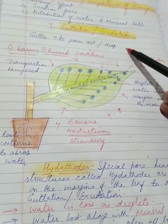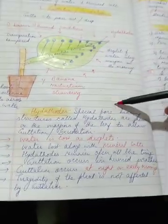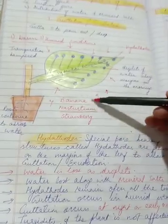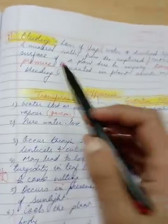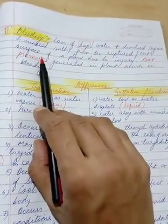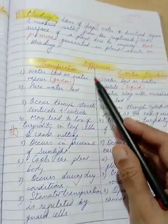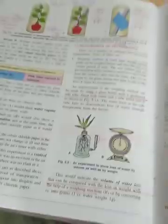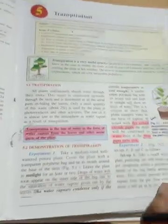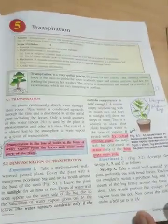All right children, so I hope you have understood very clearly three things for today: number one, guttation or exudation - what it is, how it goes on, and why, and in which plants. Please learn the examples children, stick to the examples of the textbook. Then how it is different from bleeding, what really happens, and what are the differences between transpiration and guttation.